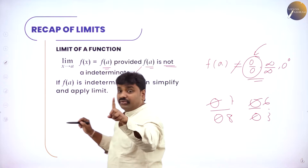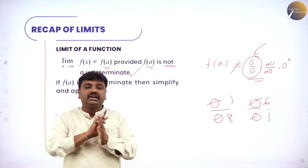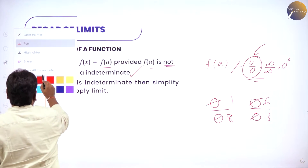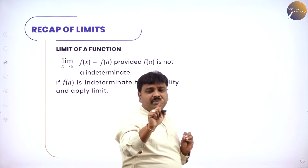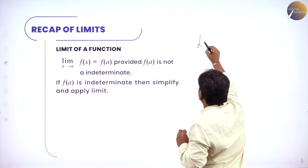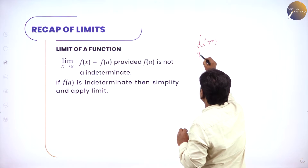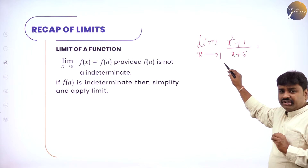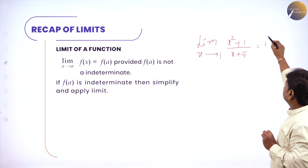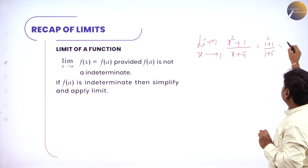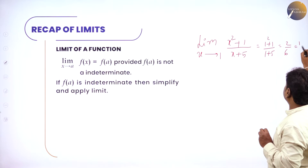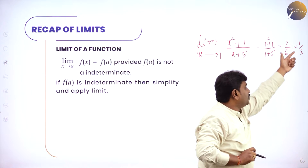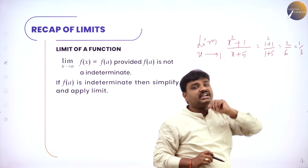When you apply limit, you should not get indeterminate. For example, limit x tends to 1 of x squared plus 1 by x plus 5: in the place of x put 1, so 1 squared plus 1 divided by 1 plus 5 becomes 2 by 6, which simplifies to 1 by 3. I applied limit and got a specific value 1 by 3, which is not indeterminate.